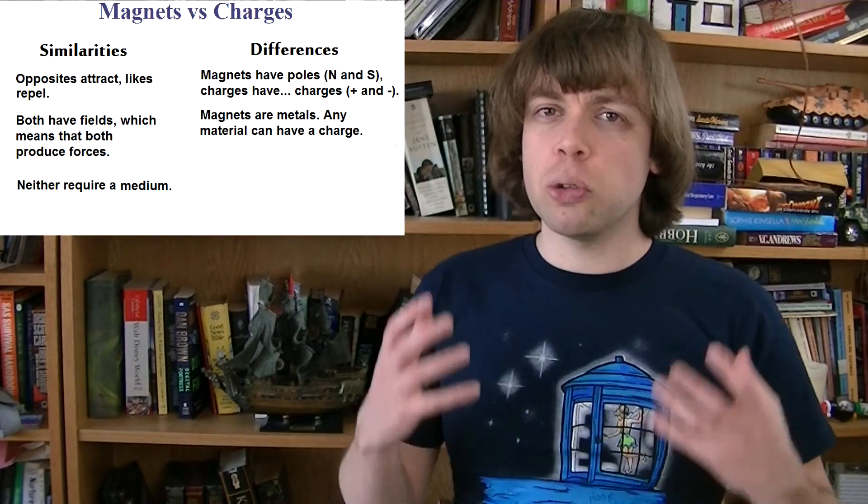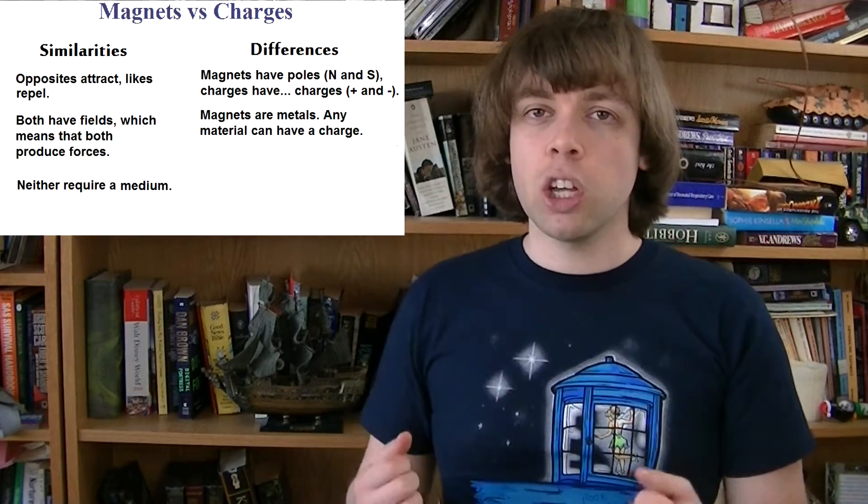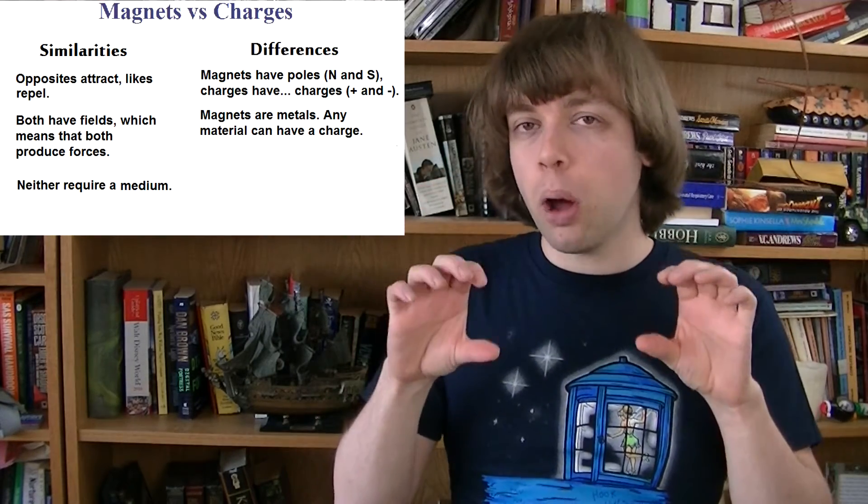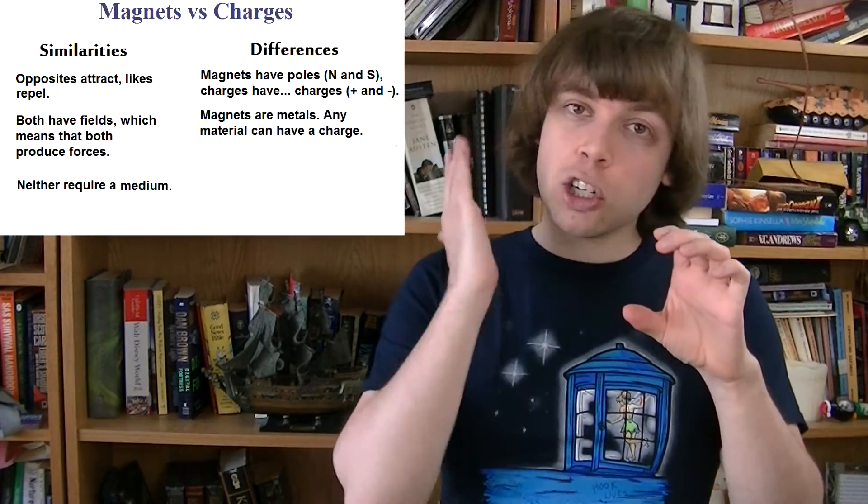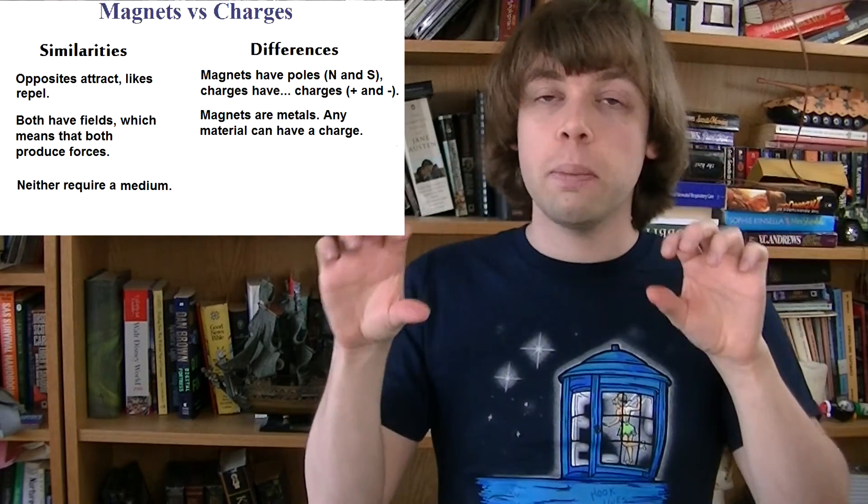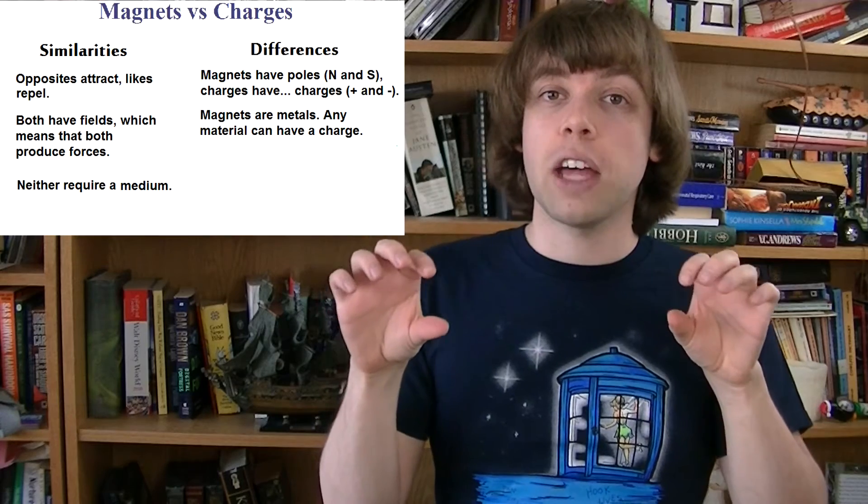But whereas charges are two separate things, a positive and a negative, you can't separate the North and South Poles of a magnet. If you try to cut a magnet in half, you'll just end up with two smaller magnets, each with their own North and South Poles.